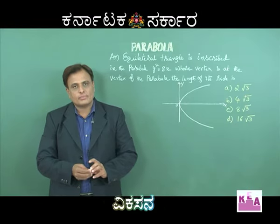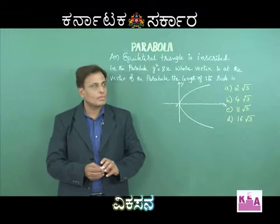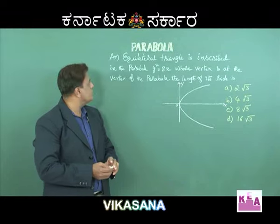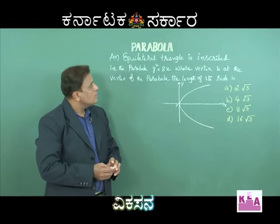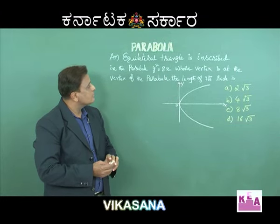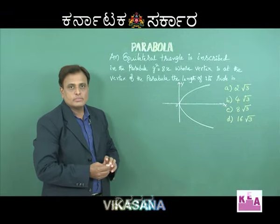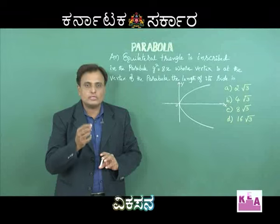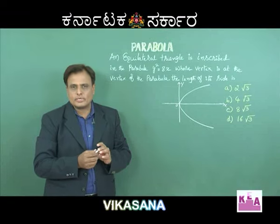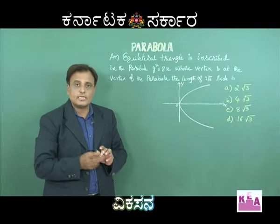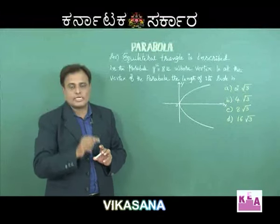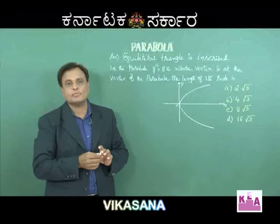Let us discuss one more example based on the parabola topic. Read the question: an equilateral triangle is inscribed in the parabola y² = 8x, whose vertex is at the vertex of the parabola. We have to find the length of its side. In an equilateral triangle all sides are equal, and here one vertex of the equilateral triangle is also at the vertex of the parabola.